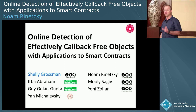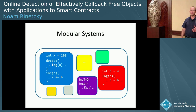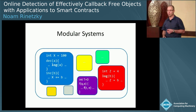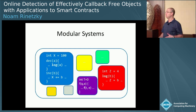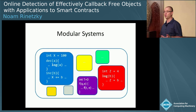What we want to do is reason about systems comprised of a collection of interacting components, where every component contains its own state and a set of methods. Only these methods can use the state, and the components interact by invoking methods on each other.